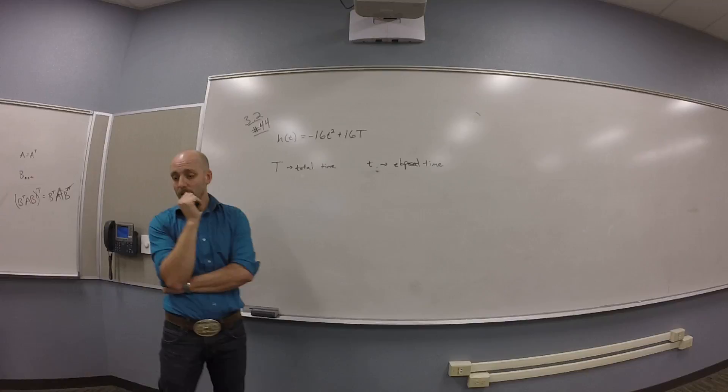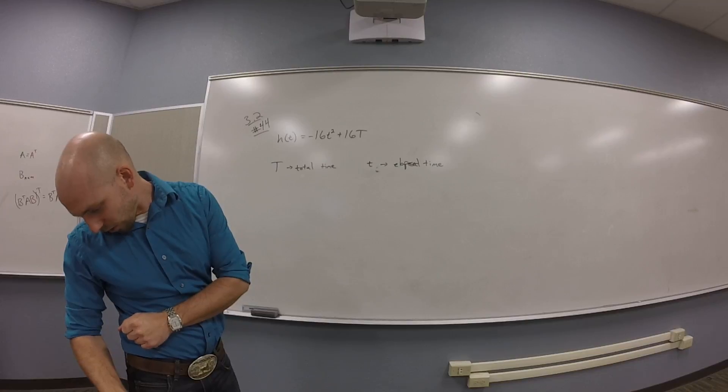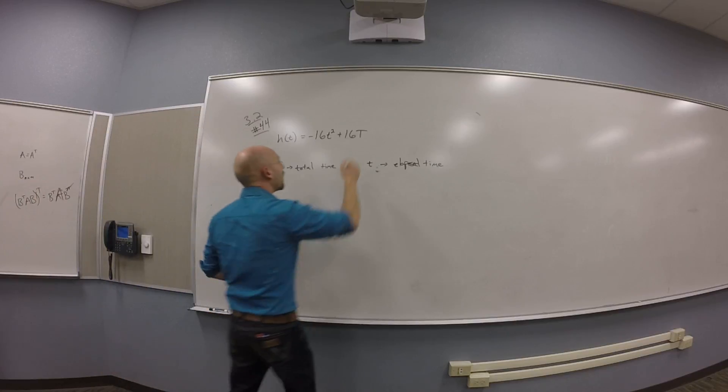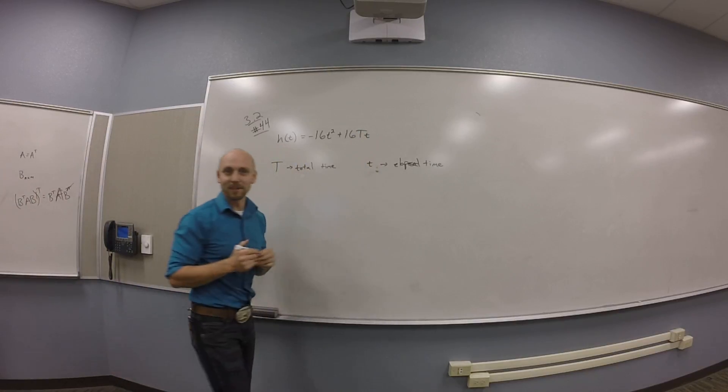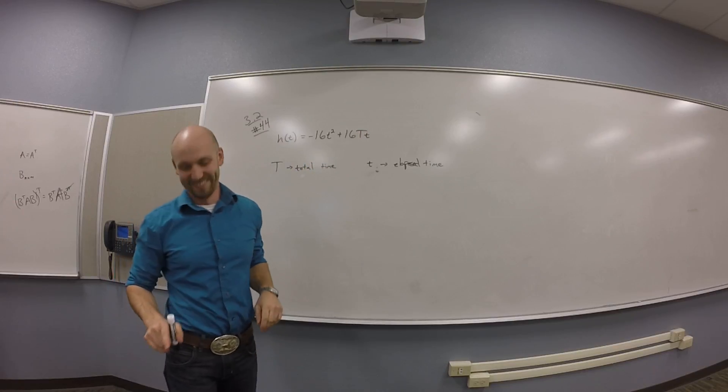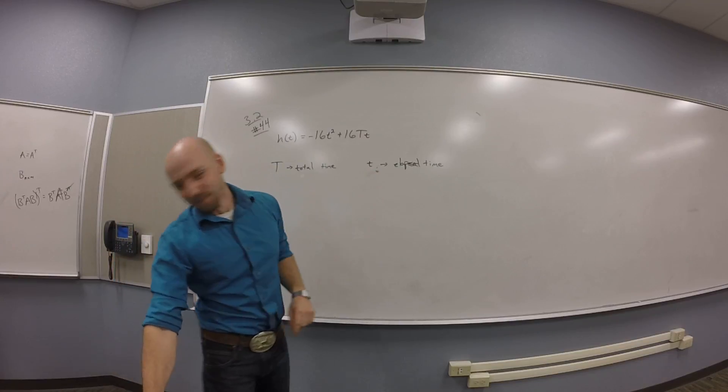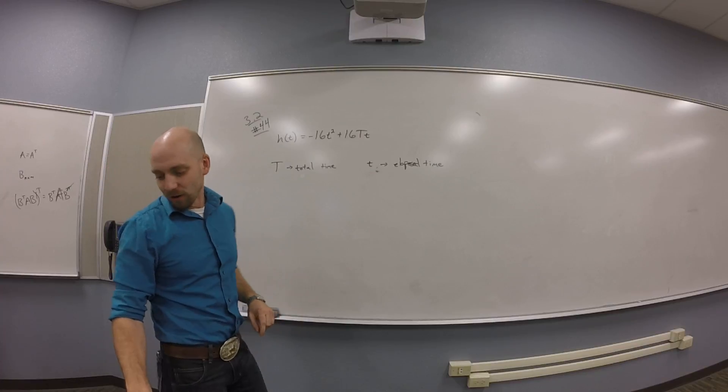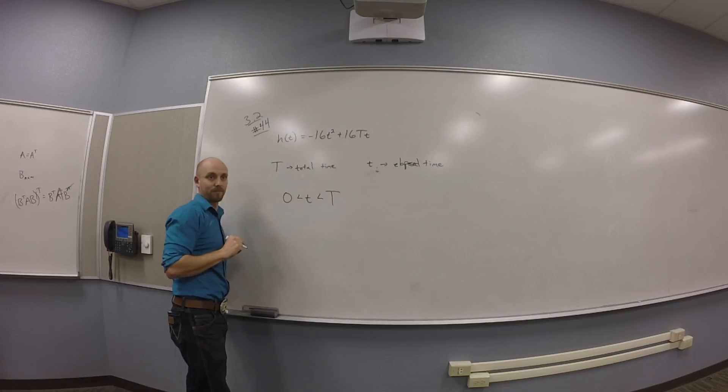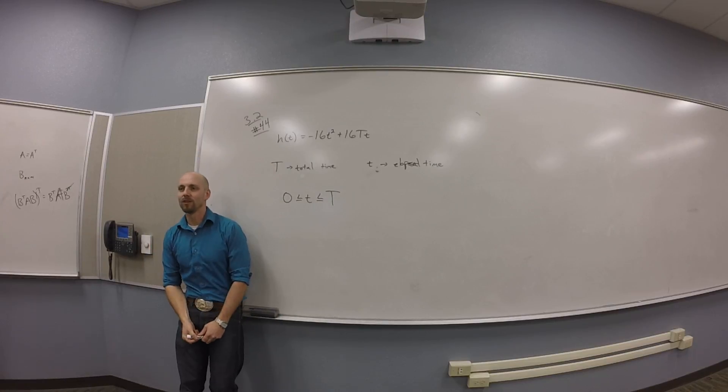Now what are they asking for? They're asking why does this model only apply for T is less than... oh, perfect. That makes things way better. There's a little t here too. So this asks why does the model only apply for zero is smaller than T is smaller than capital T.